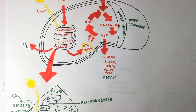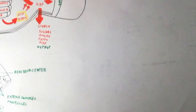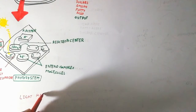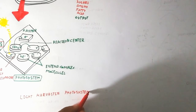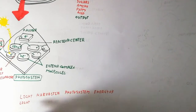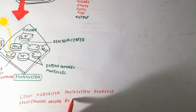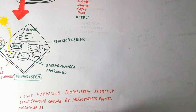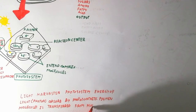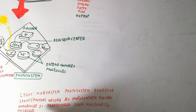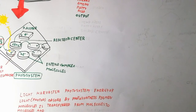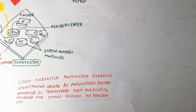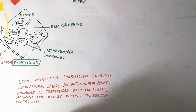Oxygen is produced from the thylakoid membrane due to photolysis — water is split to produce oxygen, protons, and electrons. In the light-harvesting photosystem, the energy of light photons absorbed by photosynthetic pigments is transferred from molecule to molecule. The chlorophyll molecule transfers an electron to the next molecule, and it finally reaches the reaction center where energy conversion begins.